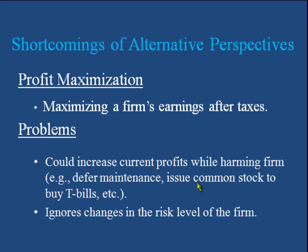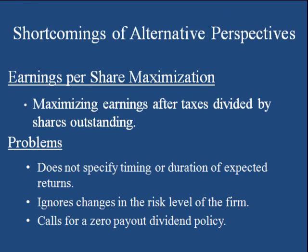Profit maximization should not be considered the ultimate goal of the firm. Another alternative goal is maximization of earning per share, but this also has shortcomings: it does not specify the timing or duration of expected returns, and it ignores risk level. Furthermore, if earning per share maximization is the ultimate goal, it implies a zero payout dividend policy, and if dividends are not paid, shareholders will not be attracted to the company.